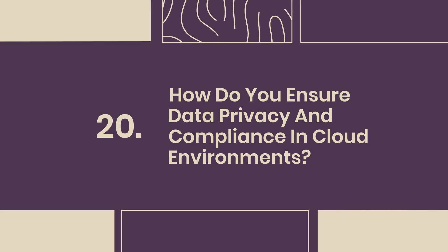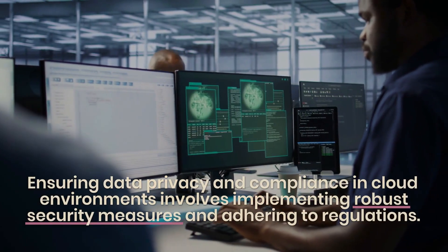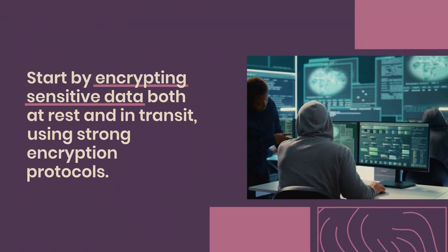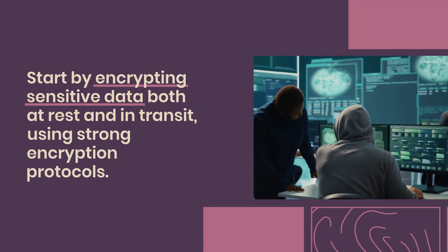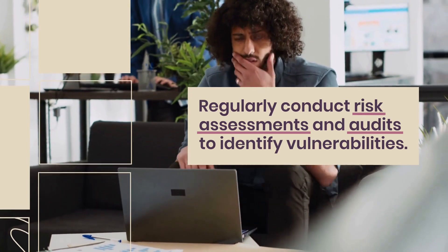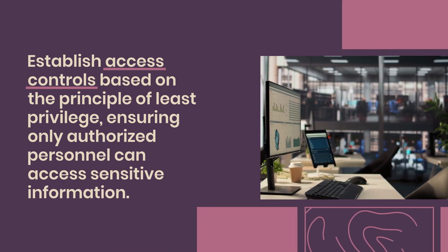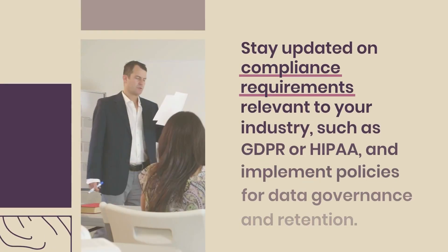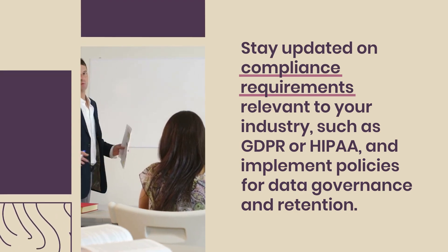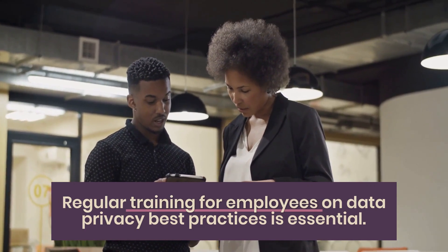20. How do you ensure data privacy and compliance in cloud environments? Ensuring data privacy and compliance involves implementing robust security measures and adhering to regulations. Start by encrypting sensitive data both at rest and in transit using strong encryption protocols. Regularly conduct risk assessments and audits to identify vulnerabilities. Establish access controls based on the principle of least privilege, ensuring only authorized personnel can access sensitive information. Stay updated on compliance requirements such as GDPR or HIPAA, implement policies for data governance and retention, and provide regular training for employees on data privacy best practices.